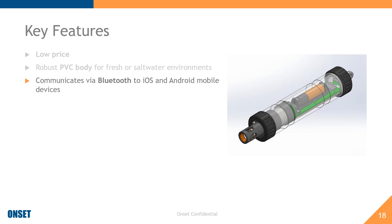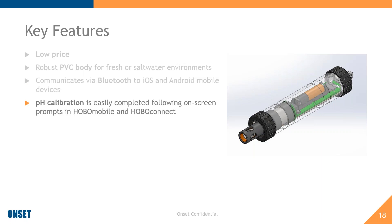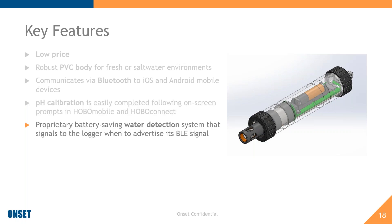It has a robust PVC body suitable for fresh or salt water environments, and communicates via Bluetooth to an iOS or Android mobile device. pH calibration is quite easy — even the marketing guy was able to figure it out without looking at the instructions. The app gives step-by-step instructions. It has battery-saving technology, going into low-power mode when submerged, and a glass bulb electrode. Logging intervals range from one second to every 18 hours, with 152 kilobytes of memory. The app will tell you how long you can expect to log continuously at whatever logging interval you select.